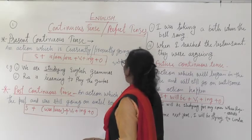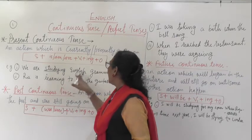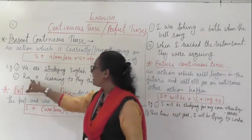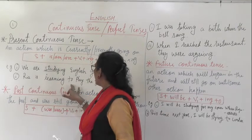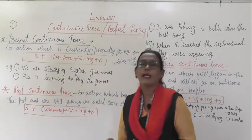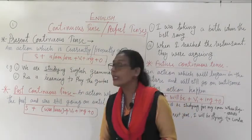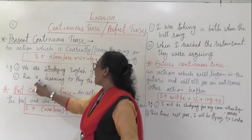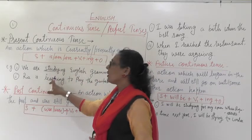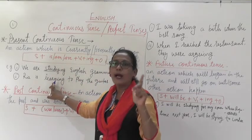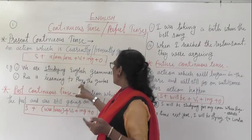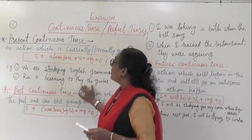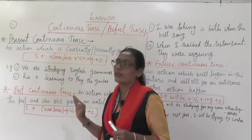The second example is: 'Ria is learning to play the guitar.' Here, 'is' is the auxiliary verb and 'learn + ing' gives 'learning'. This is present continuous tense — an action which is presently or currently going on.